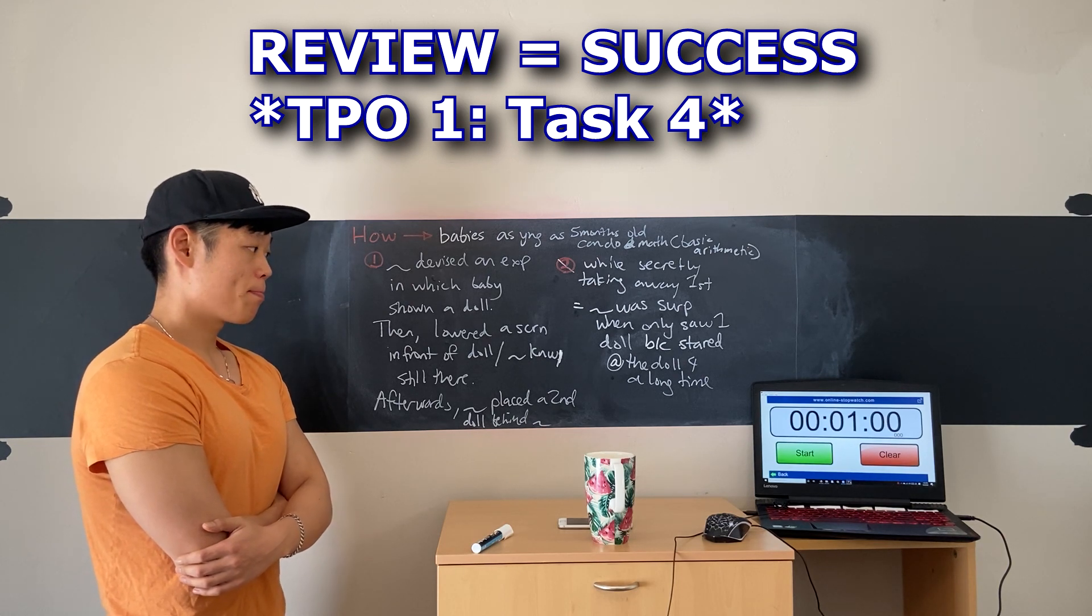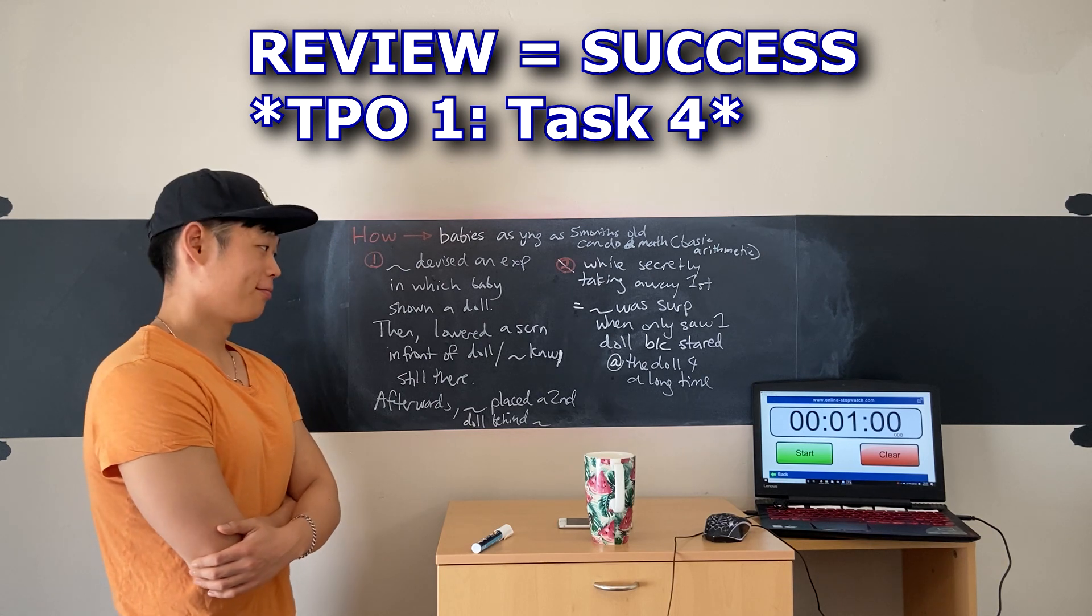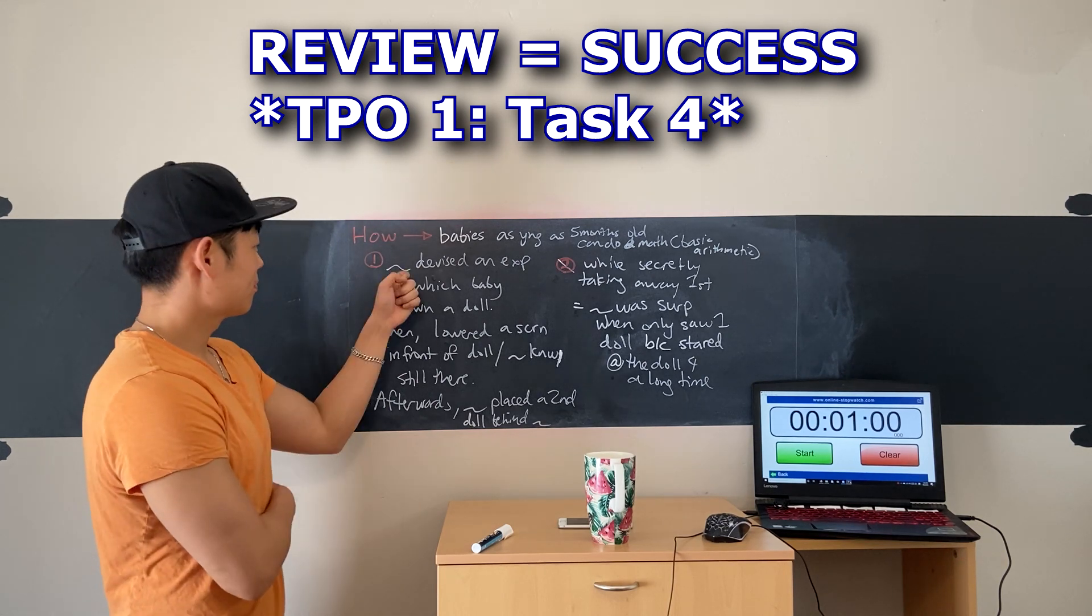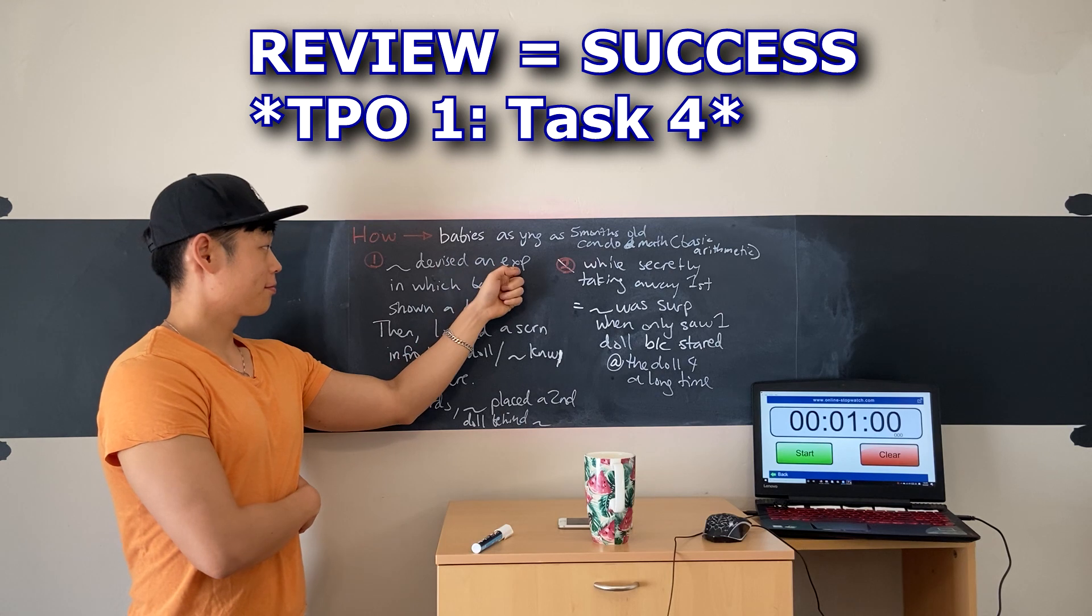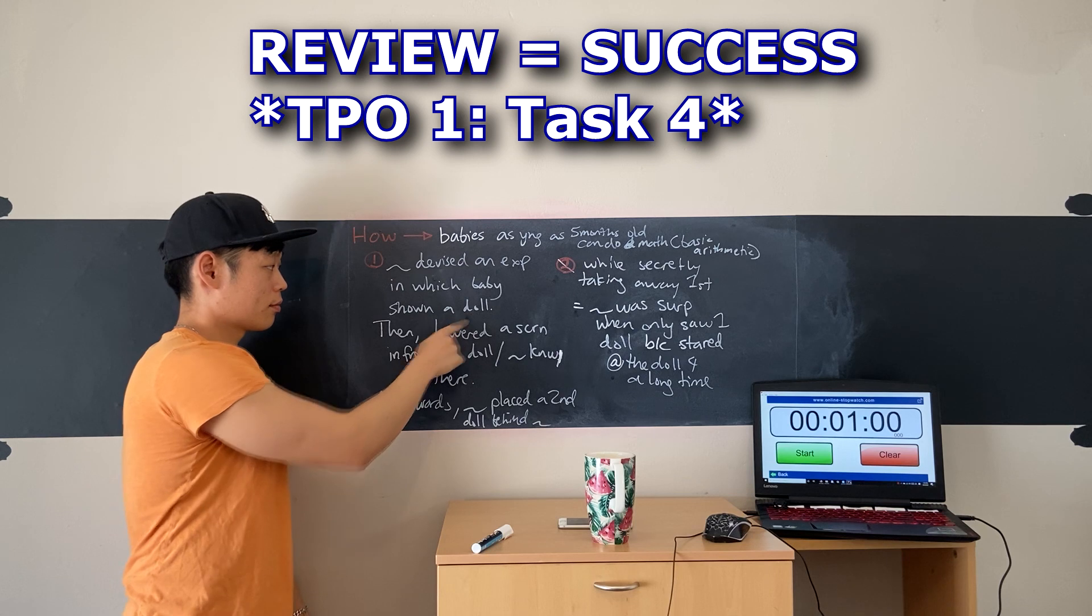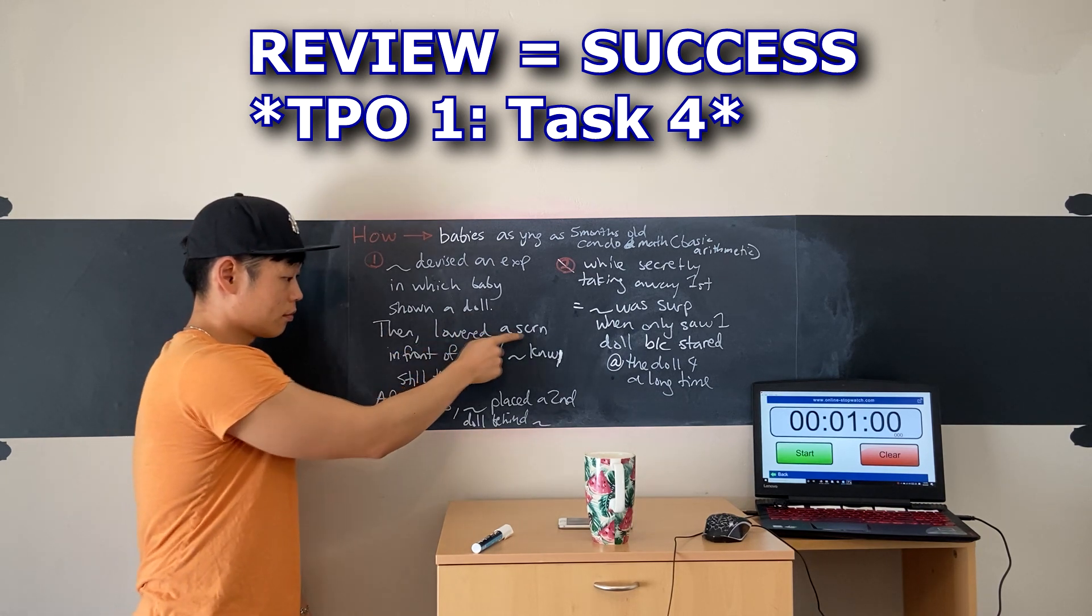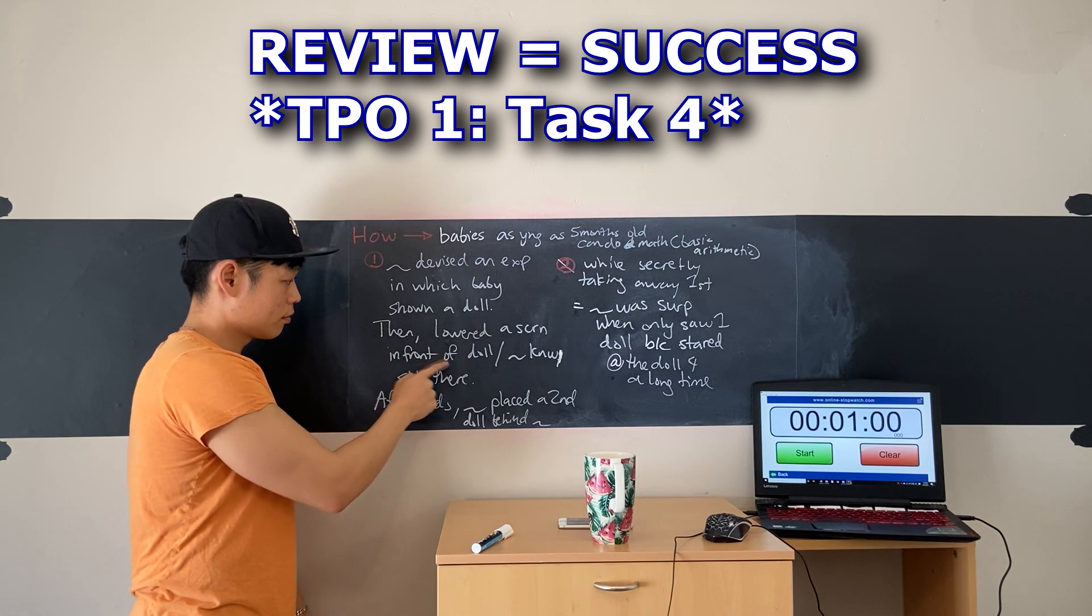So they devised an experiment. In this experiment a baby is shown a doll on a table. The baby looks at the doll, then the researcher lowers a screen in front of the doll so now the doll's hidden behind the screen. But the baby's already seen the doll and so knows it's there.